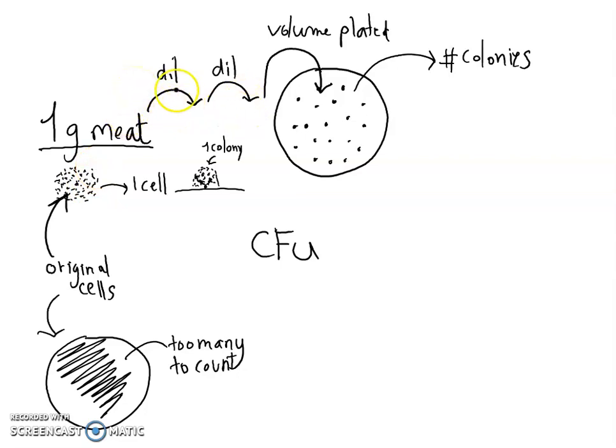So two dilutions in a row, actually there were three dilutions overall, and then we plated a specific volume. After growth took place, we counted the number of colonies that resulted from that volume plated from that particular dilution.